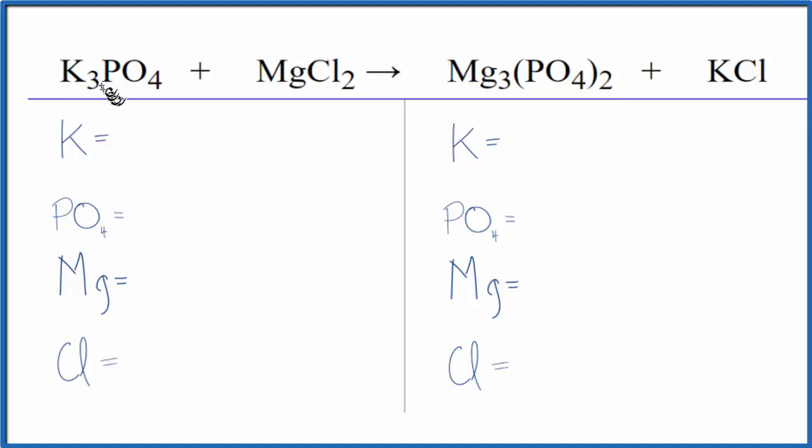Let's start by counting the atoms up. Three potassium atoms and then this phosphate, PO4. It's a polyatomic ion. We have it here. It stays together. We have it over here. We're just going to count that as one thing. That'll make it easier to balance. One phosphate ion, one magnesium atom, two chlorine atoms.